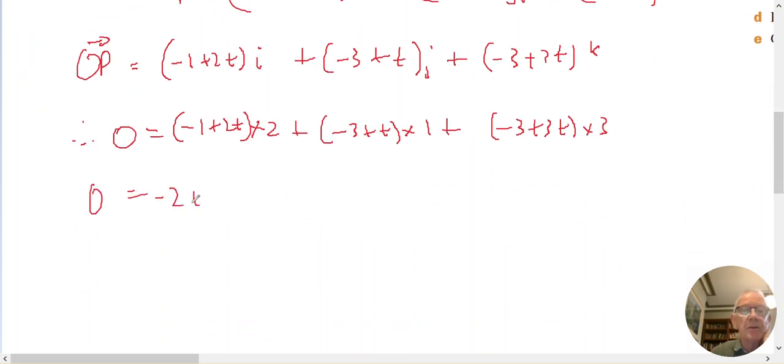0 equals minus 2 plus 4T, minus 3 plus T, minus 9 plus 9T. Minus 2 minus 3 minus 9 is minus 14 equals 4 plus 1 plus 9, 14T.